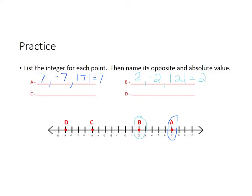The next one is C. If you look on the number line, that point is on negative five. The opposite of negative five is the point that is the same number of units away from zero but on the other side, so that would be five. And the absolute value of negative five is five, because negative five is five units away from zero.